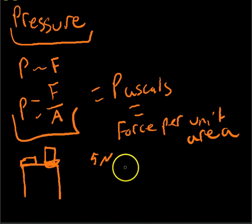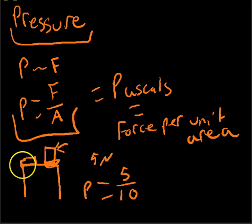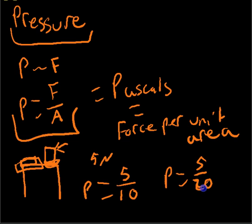So we have P is equal to five over ten for this book. And then here, let's say the area of touching is twenty. And then we have P is equal to five over twenty. Now here it's one-half, P is one-half, one-half Pascal. Now P here is one-fourth.